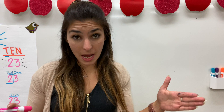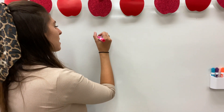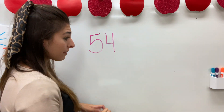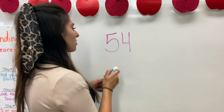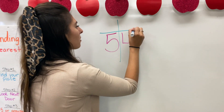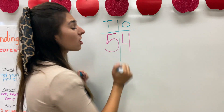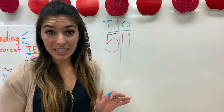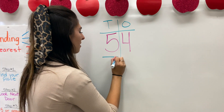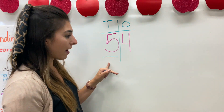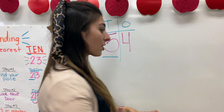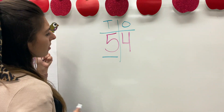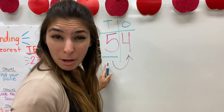So now I'm going to do a totally different number, still following that rhyme but this time doing more of a number line. Let's make it 54. Step one, I need to find my place, so I'm going to draw my two-column chart: ones and tens. We are rounding to the nearest ten, so I'm going to underline the number in the tens place, which is the five.